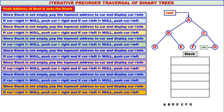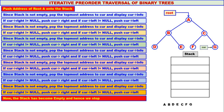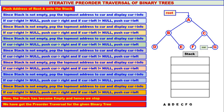The right child of G is null and the left child of G is also null, so no pushing. The stack has now become empty, therefore we stop. We have got the pre-order traversal for the given binary tree: A, B, D, E, C, F, G. This is the pre-order traversal for the given binary tree.